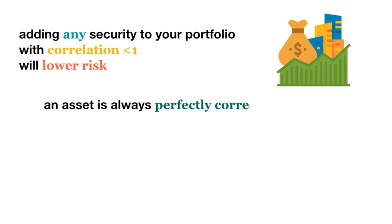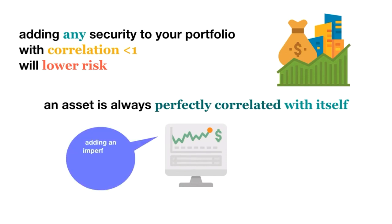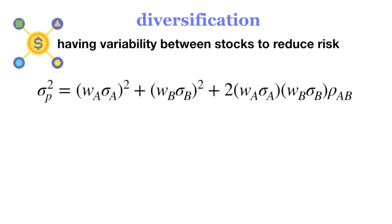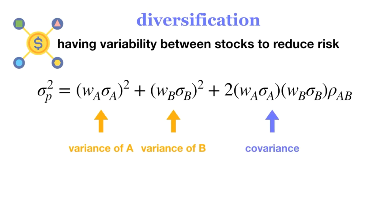In fact, adding any security to your portfolio will lower the risk if it has a correlation of less than 1 with your existing securities. An asset is always perfectly correlated with itself — for example, all shares in a company sell at the same price in the market at all times. So adding an imperfectly correlated asset means that we will not be as affected when one asset is performing poorly, because the performance of our other assets are not perfectly following the same pattern. Holding onto a portfolio of assets that do not behave identically is called diversification. Having some variability between our stocks helps us to diversify and thus reduce our risk. This is the financial equivalent of saying: don't put all your eggs in one basket. We can see this in our formula for the variance of a portfolio comprised of two assets. The variance of the two securities is affected by the variance of each stock individually, as well as the covariance. Notice that because of this covariance term, the higher the correlation is, the higher the portfolio variance becomes.